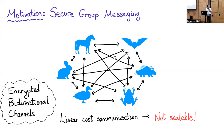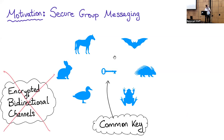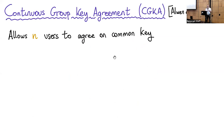This means it's not scalable. So instead, what we want to do is have users agree on a shared common key, which they will then use to encrypt the messages. This brings us to the primitive of Continuous Group Key Agreement, or CGKA, that was coined by Alwen et al. in Crypto 2020.